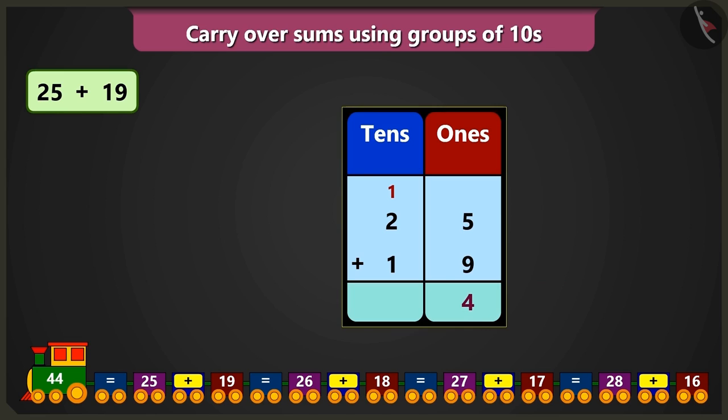Now in the box of tens, the carryover number 1, when added to 2, will be 3 and adding 3 and 1 will make 4. So 4 tens and 4 ones will be the number 44.